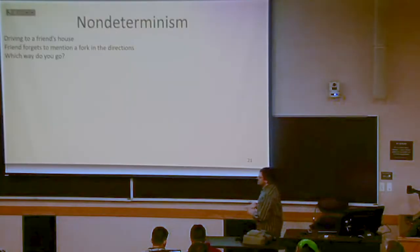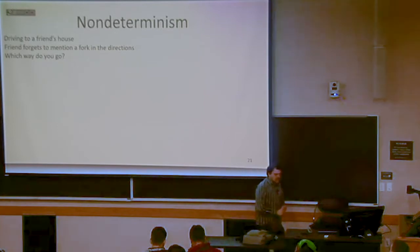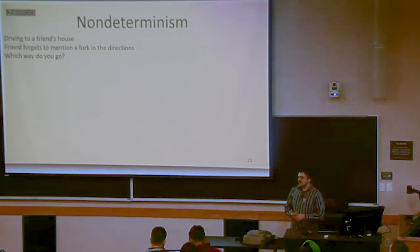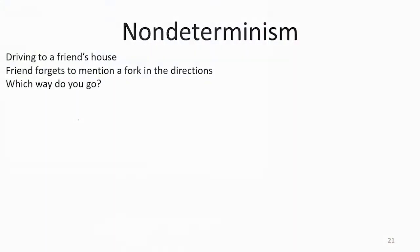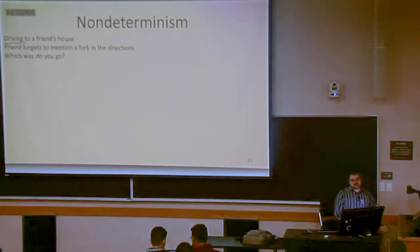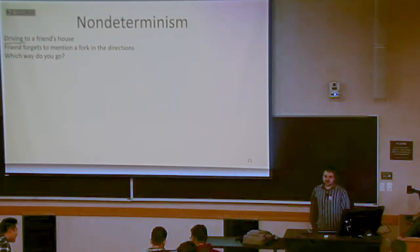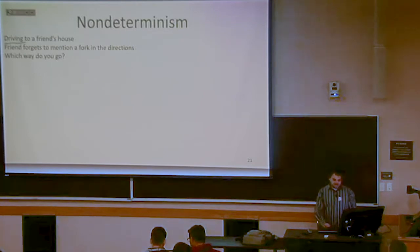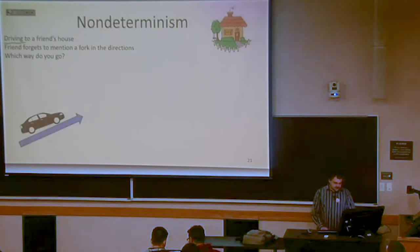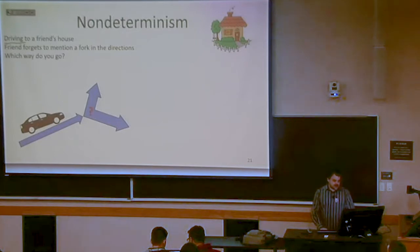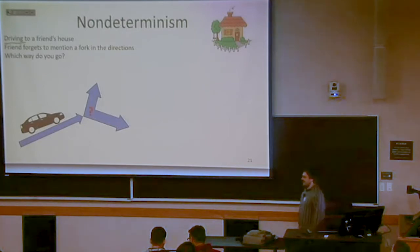To give you an intuition for exactly what non-determinism is trying to do, let's say you're trying to drive to your friend's house in a post-apocalyptic world — cell phones are dead, no GPS. Your friend has given you some directions, but you come to a fork in the road that's not mentioned in the directions. Which way do you go? There's your friend's house, and you come to this fork in the road, wanting to know which way is the correct way to get there.